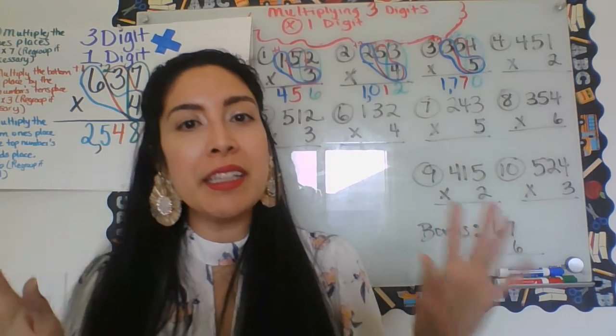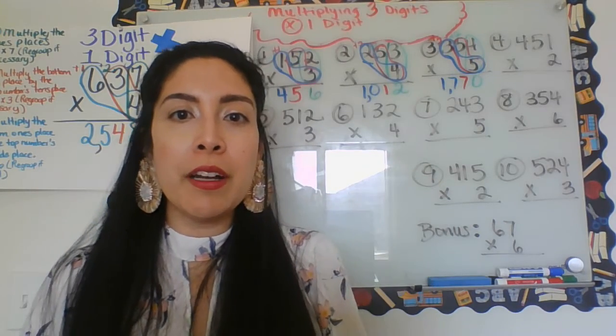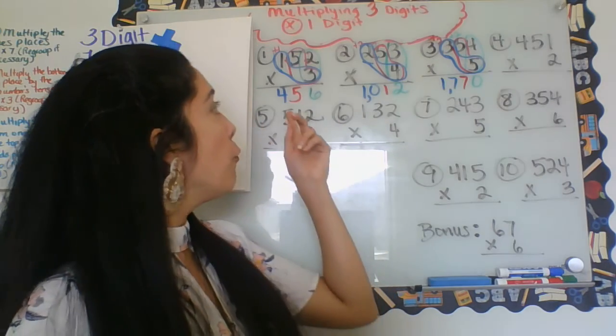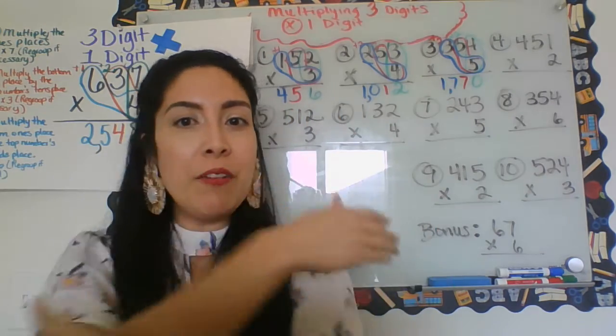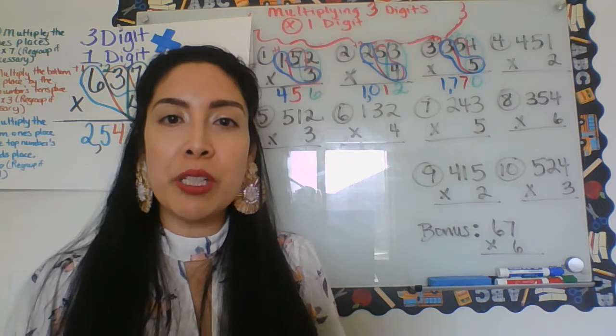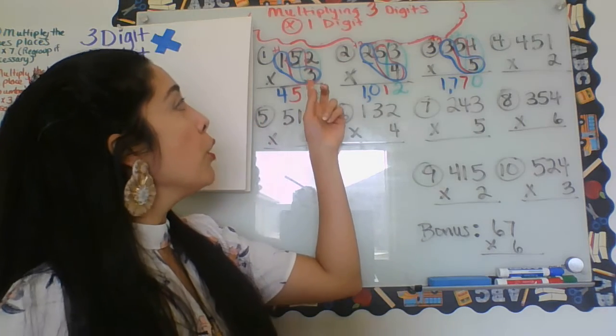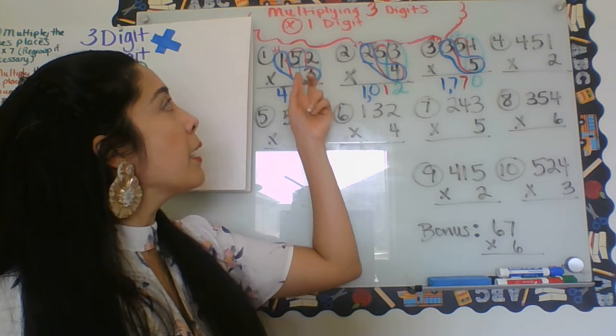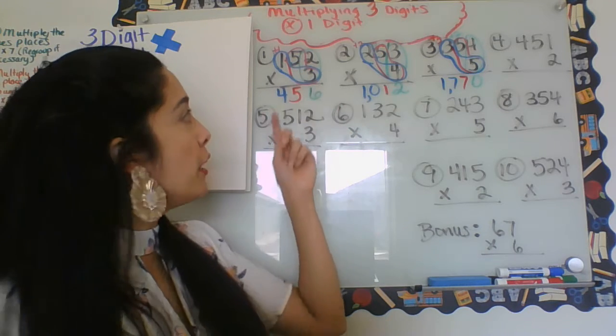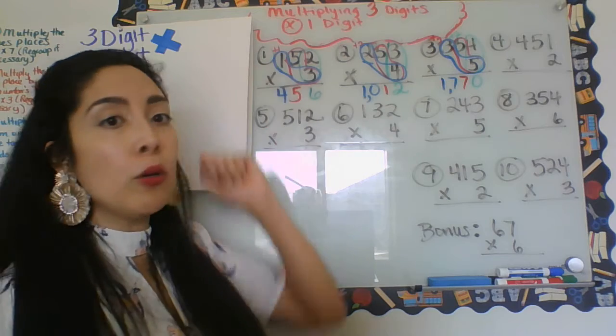All right, fourth grade, let's check your status so far. What's your answer? What's your answer to number one? 456. If so, give yourself a hug. Good job, you are doing just fine. Remember, three times two is six. Next value, three times five is 15. Drop the five, carry over a one.